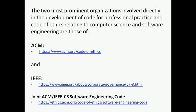These links shown here are the direct references to these codes by ACM and IEEE, although there is one link on the ACM website but it is referred to as the joint ACM IEEE CS software engineering code.